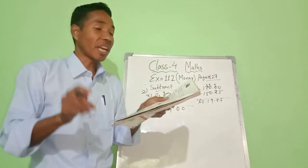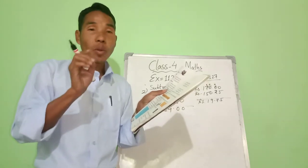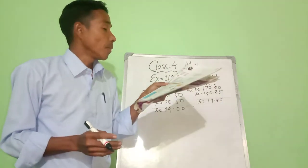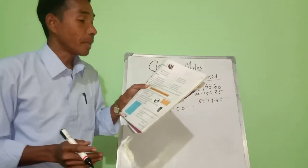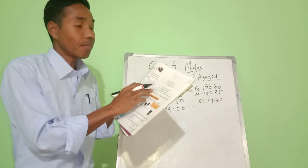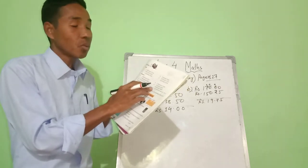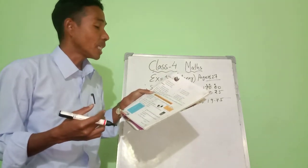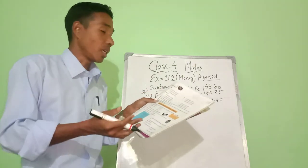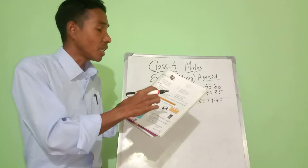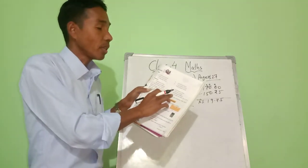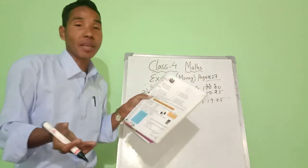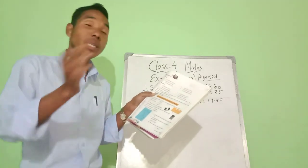Try to do from number c to f in your notebook at home — that is your homework. Number three: Rasmi bought a cake for rupees 150.50, a balloon for rupees 25.75, and chocolate for rupees 78.75. How much money did she pay in all? That means we do addition: write 150.50, then 25.75, then 78.75 and find the total.